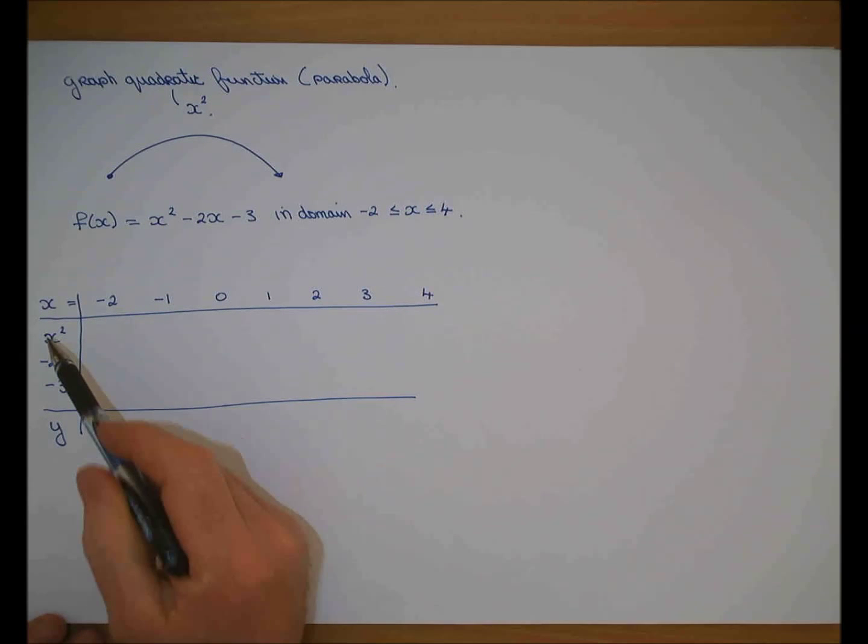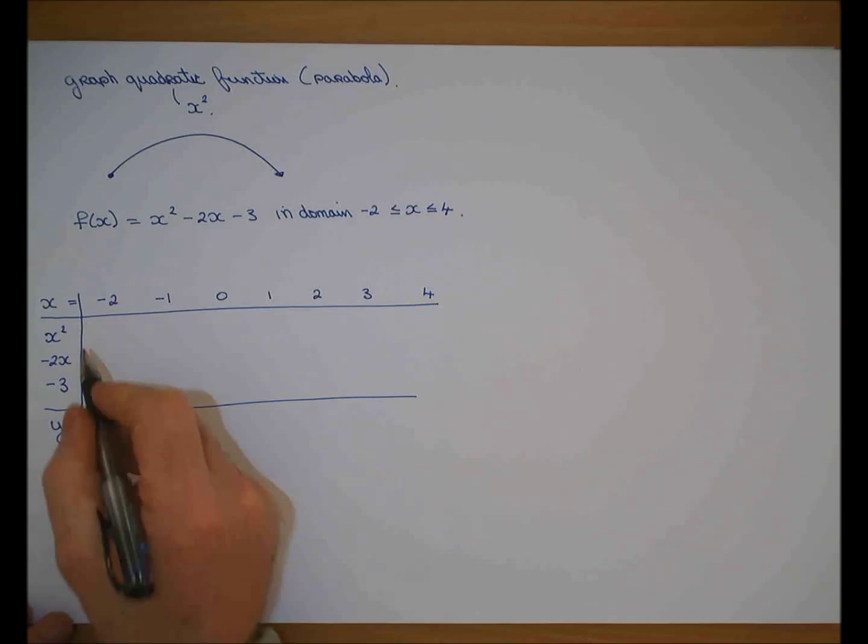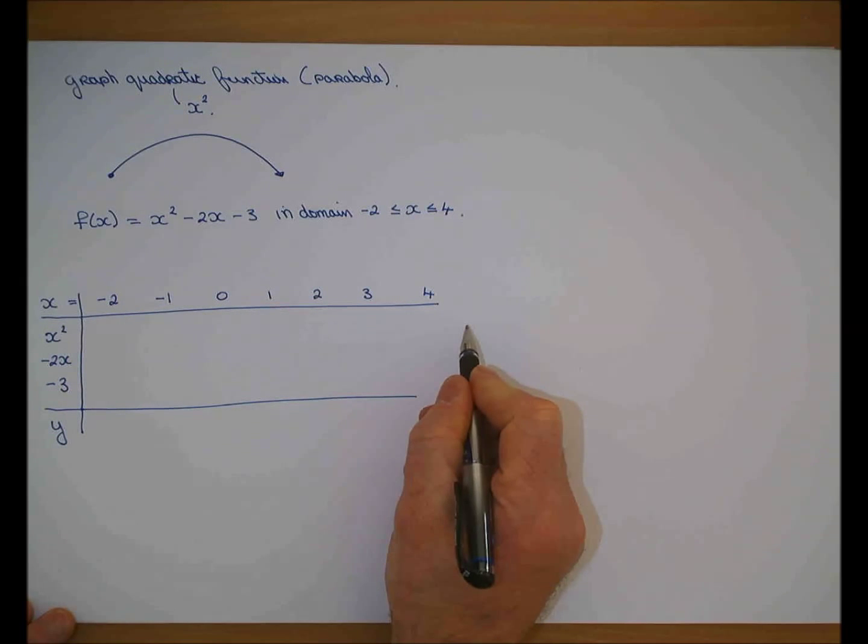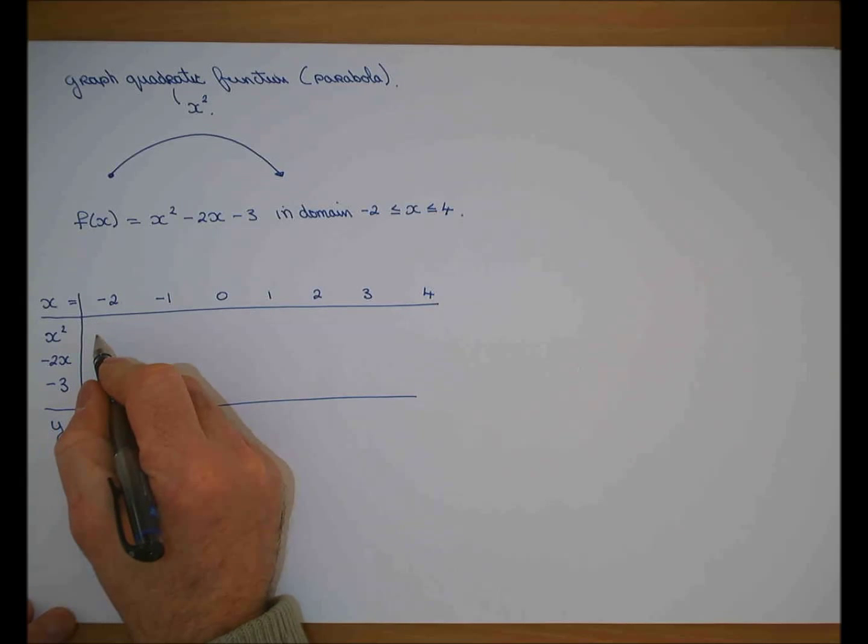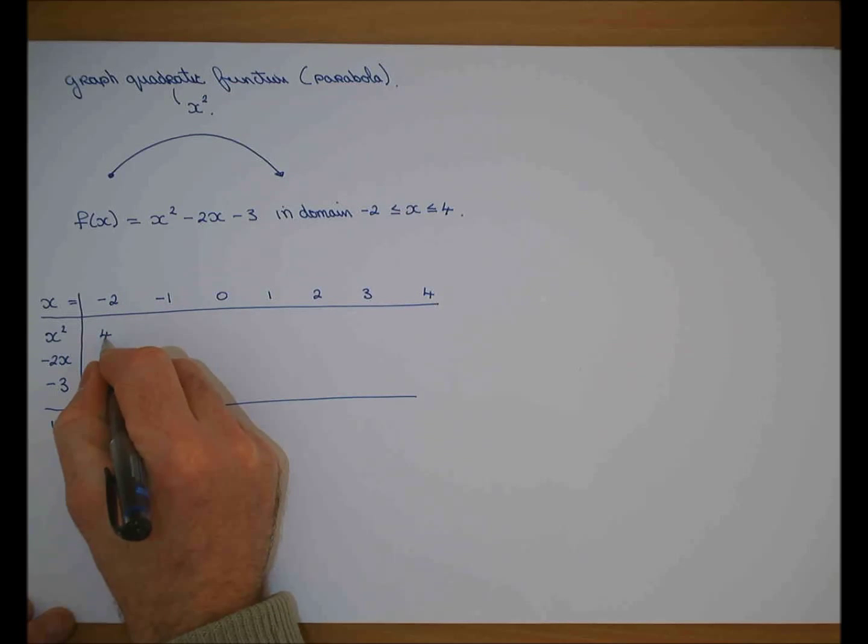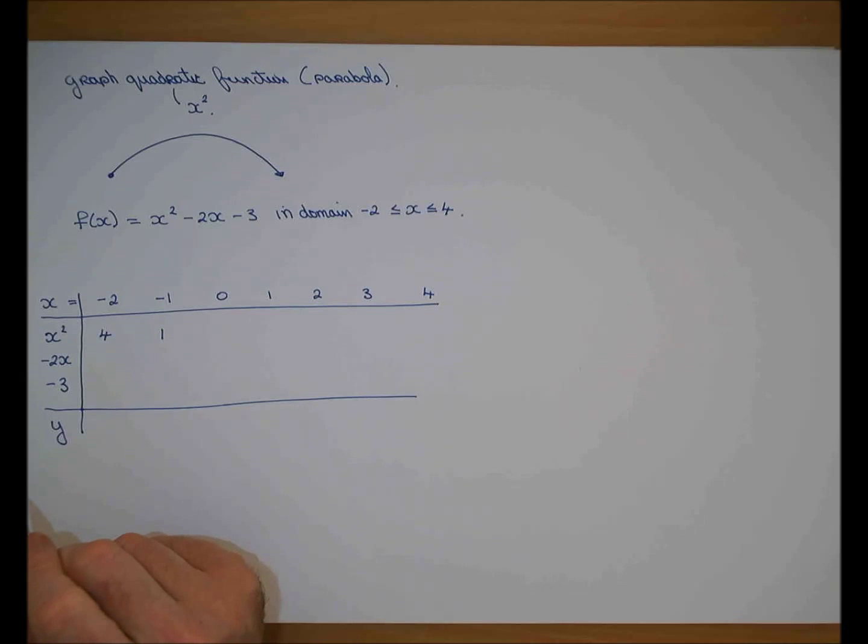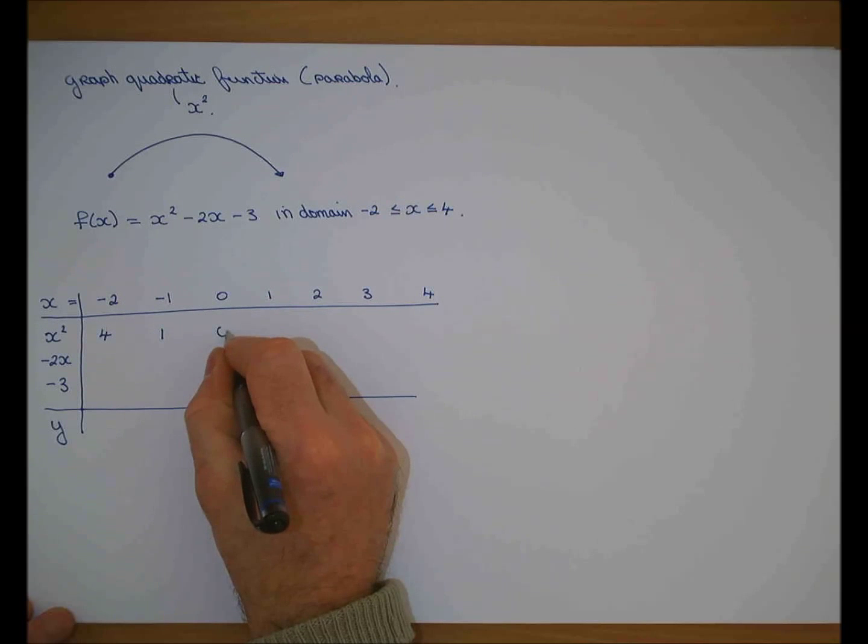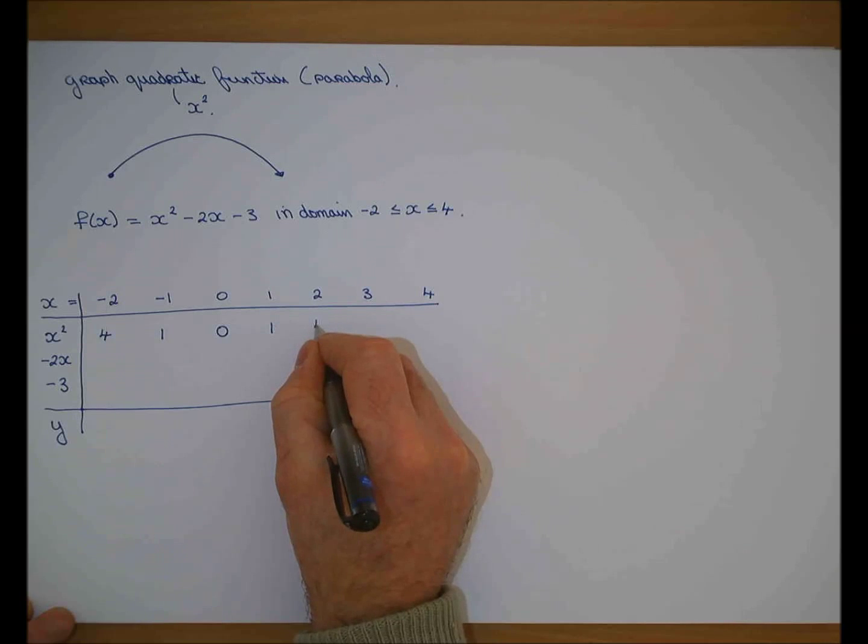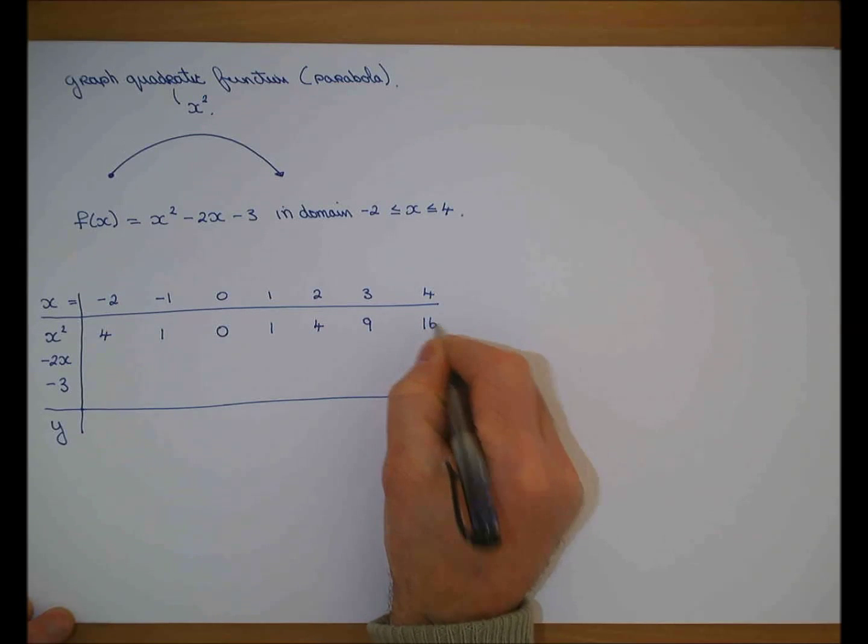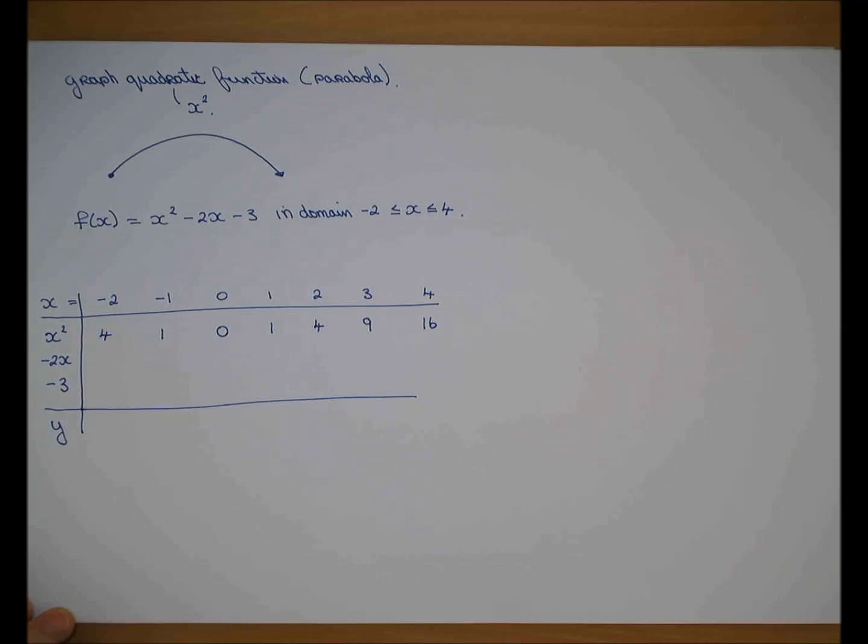And there is an x squared line. The x squared line means I square each one. What's minus 2 squared? Minus 2 by minus 2, plus 4. Minus 1 squared is 1, because minus by minus gives plus. And any time you square a number, no matter what its sign, what will it turn out to be? Positive. 0 squared, 1 squared, 2 squared, 3 squared, 4 squared.